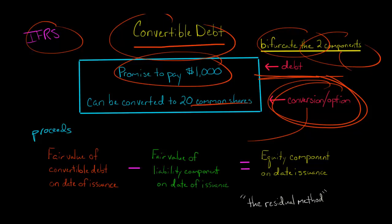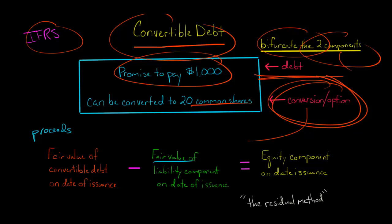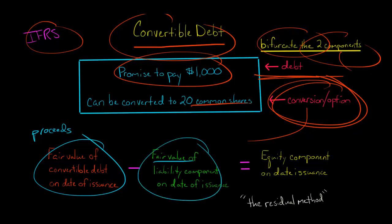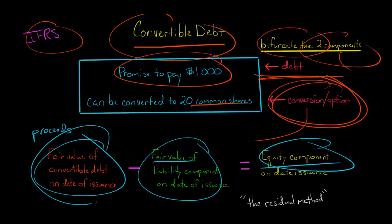What's going to be a little more difficult is the fair value of the liability component — the promise to pay on the date of issuance. We're basically going to discount the cash flows to calculate this, and that's going to be the most complicated part. We take the fair value of the whole thing minus the fair value of the liability, and that gives us the value of the equity component. The equity is a residual — it's what's left over.